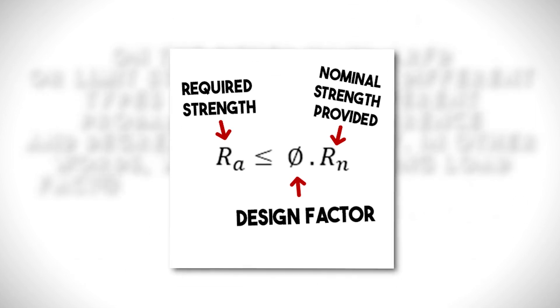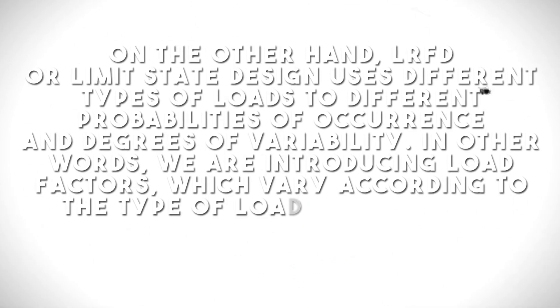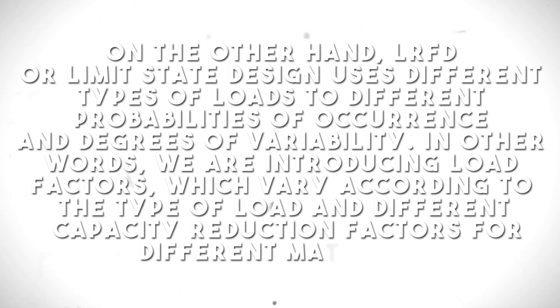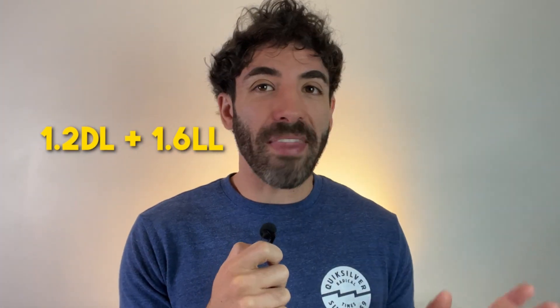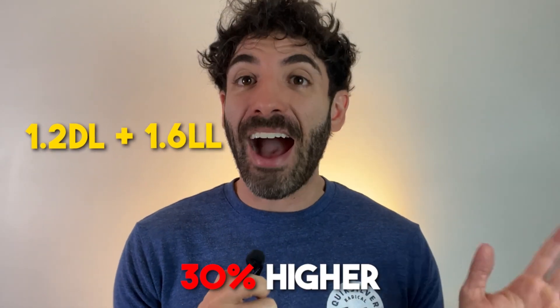LRFD, or limit states design, uses different types of loads with different probabilities of occurrence and degrees of variability. In other words, we introduce load factors that vary according to the type of load, and different capacity reduction factors for different materials. For the same slab example — 100 PSF dead load and 40 PSF live load — one LRFD load combination would be 1.2 dead load + 1.6 live load for a strength check such as shear or bending moment. Notice the live load factor is about 30% higher than the dead load factor, because live load is more difficult to accurately predict. That's the basic premise of LRFD — it's a game of probabilities.